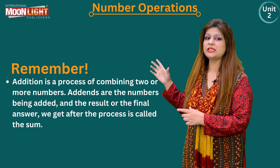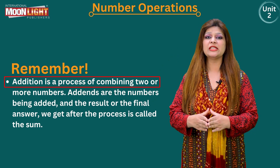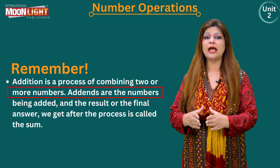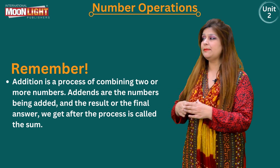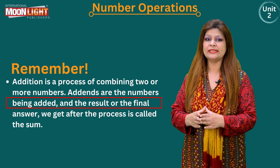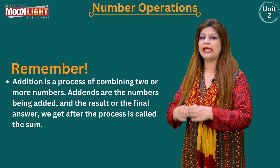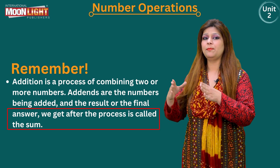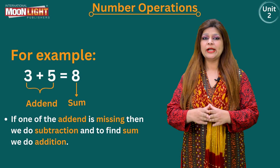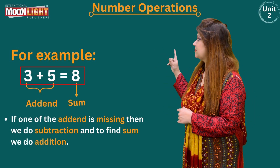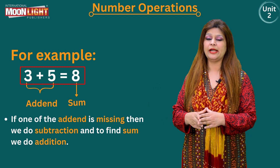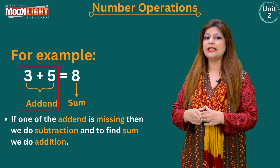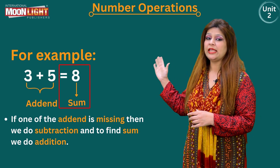Remember these rules: addition is a process of combining two or more numbers. The numbers being added are called addends. The result we get after this process is called the sum. For example, three plus five equals eight — here three and five are both addends, and eight is the sum.